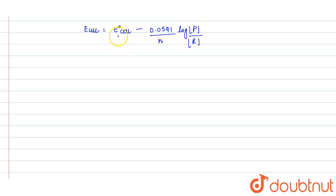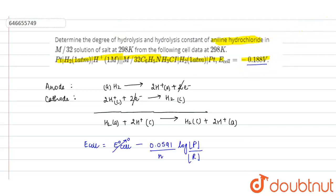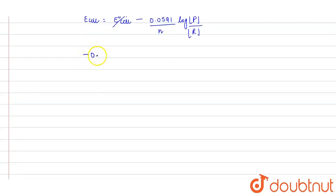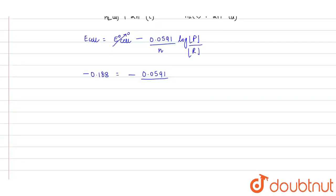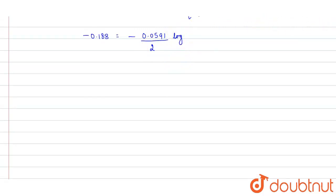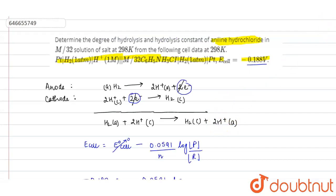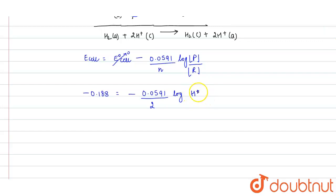Since the reaction here is at equilibrium, E°-cell will be zero, and E-cell is given as minus 0.188. So: minus 0.188 equals minus 0.0591 divided by 2, times log of [H⁺ anode]² times P(H₂ cathode), divided by [H⁺ cathode]² times P(H₂ anode).